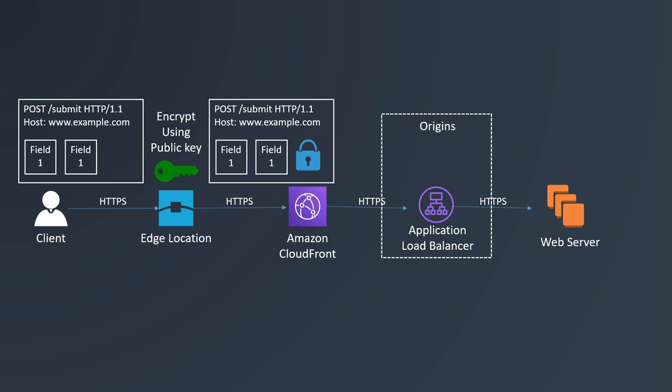The encrypted information is passed all the way to the web server. The web server has access to the private key and will be able to decrypt that encrypted field using the private key to get the credit card number. As we can see, none of the CloudFront locations or the application load balancer have the opportunity to decrypt that field — only the web server, which needs custom application logic to decrypt it.